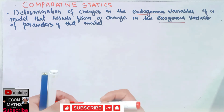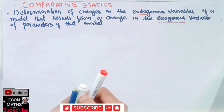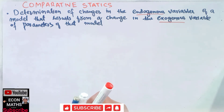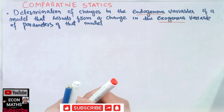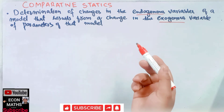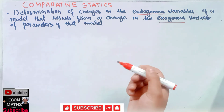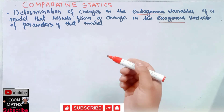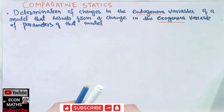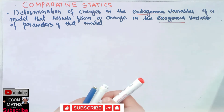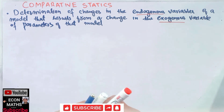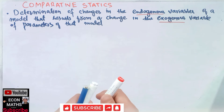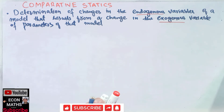What does this mean? It simply means that in comparative statics, we compare two different economic outcomes — that is, before and after a change in some underlying exogenous variable or parameters. It is used by economists to see the impact of, let's say, a tax or subsidy.